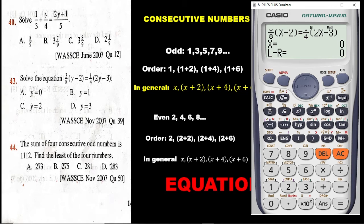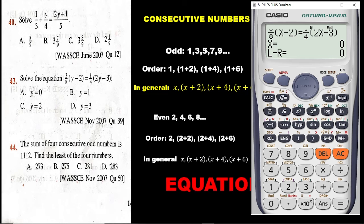Now the last question: the sum of 4 consecutive odd numbers is 1112. Find the least of the 4 numbers. For consecutive odd numbers, consider 1, 3, 5, 7, 9 — these are odd numbers and the difference between each is 2. So from the first to the second odd number the difference is 2, from the second to the third is also 2, and from the first to the third the difference is 4.